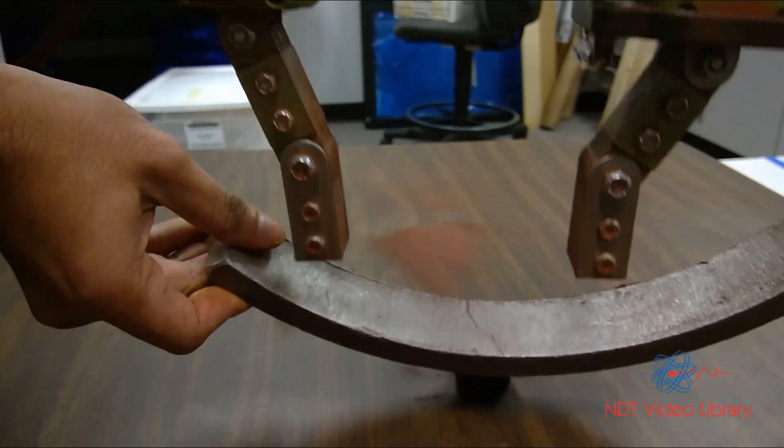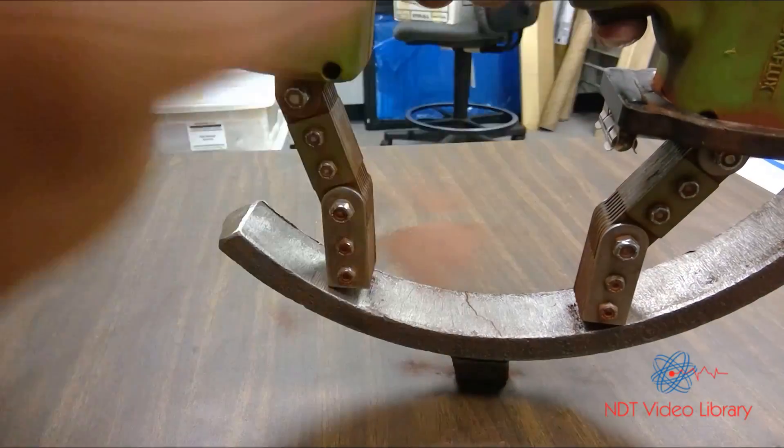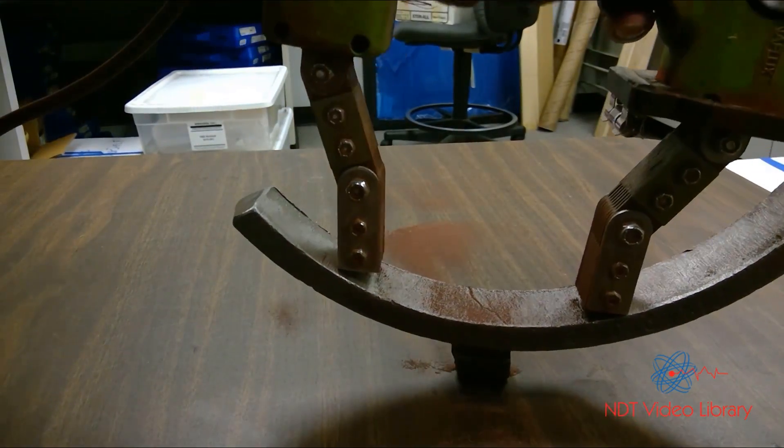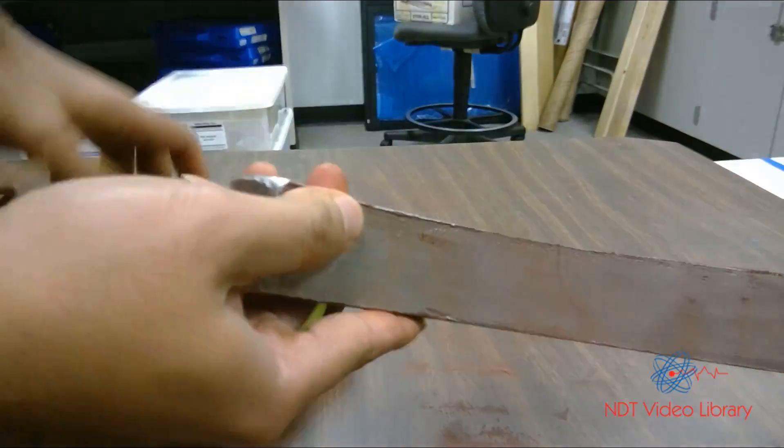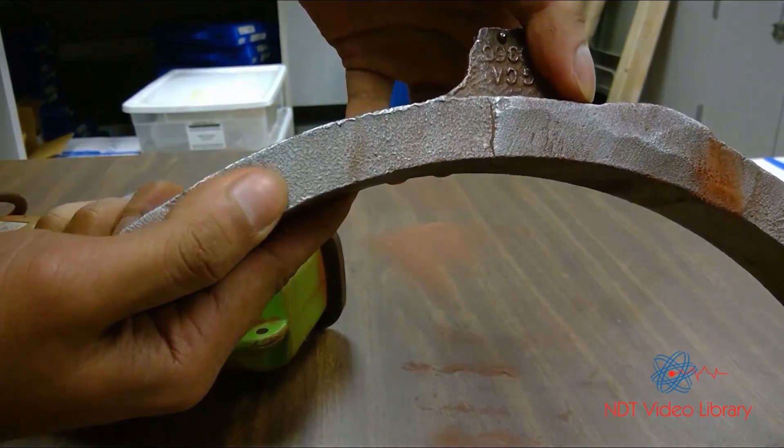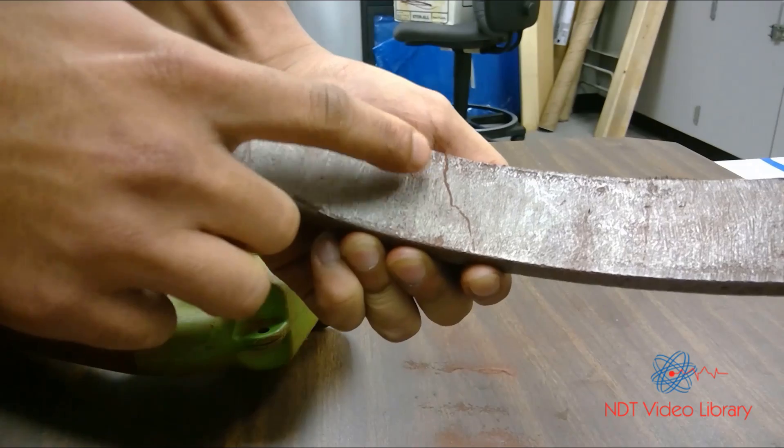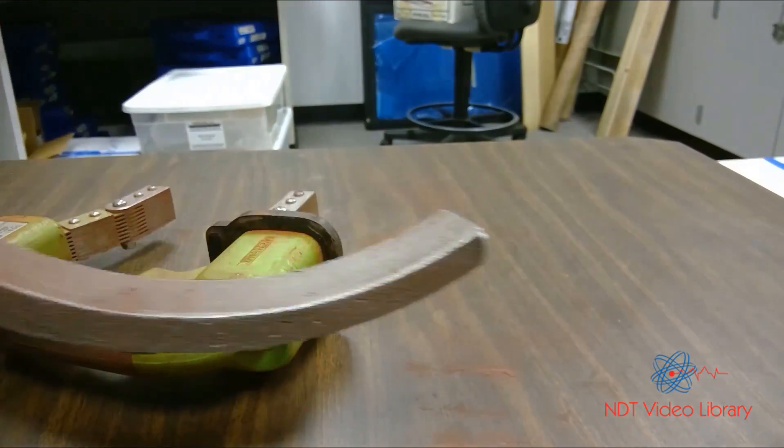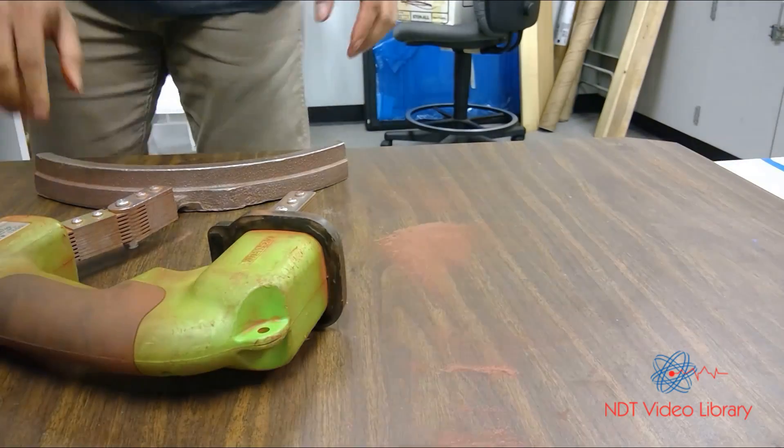As I spray the powder, iron powder particles, if there is a crack there should be magnetic flux leakage. As we saw, the jumping over of the force lines creates two new poles, and particles will be attracted at the crack. That's how you detect discontinuities in magnetic particle testing using a yoke.